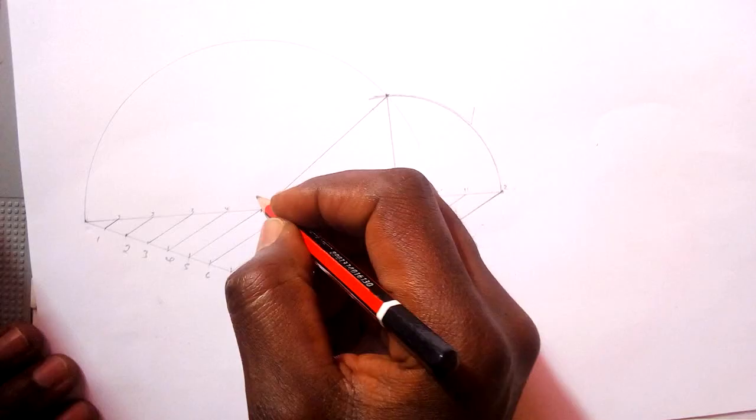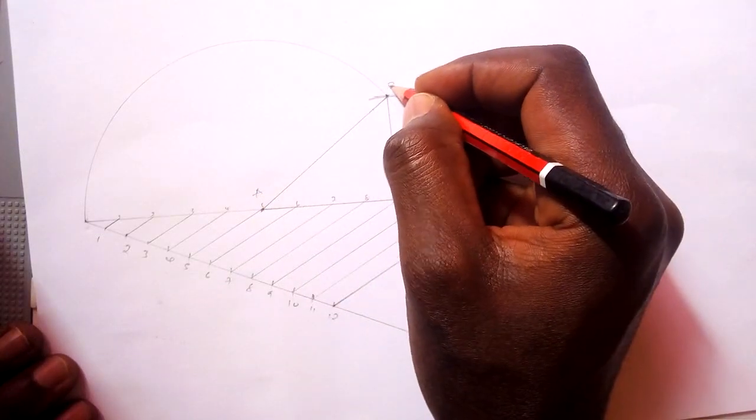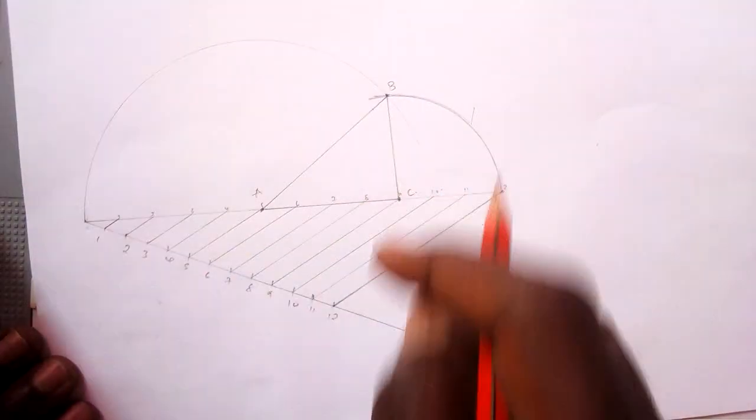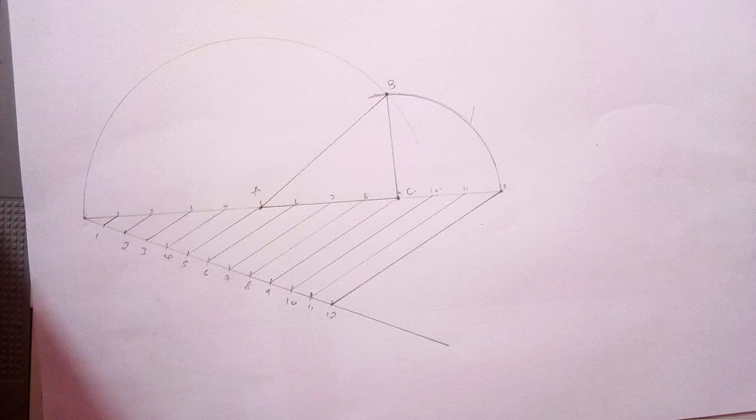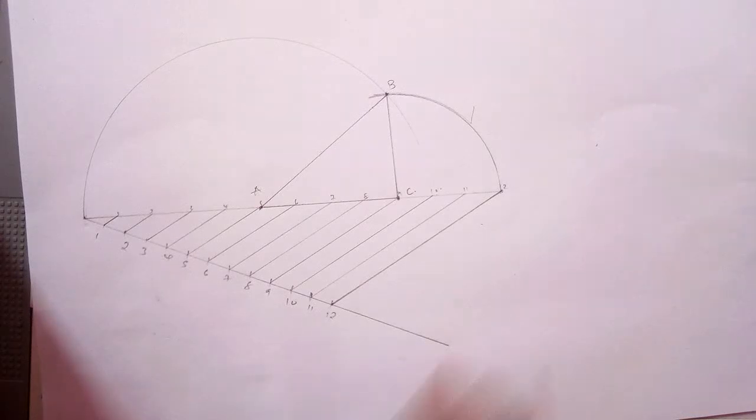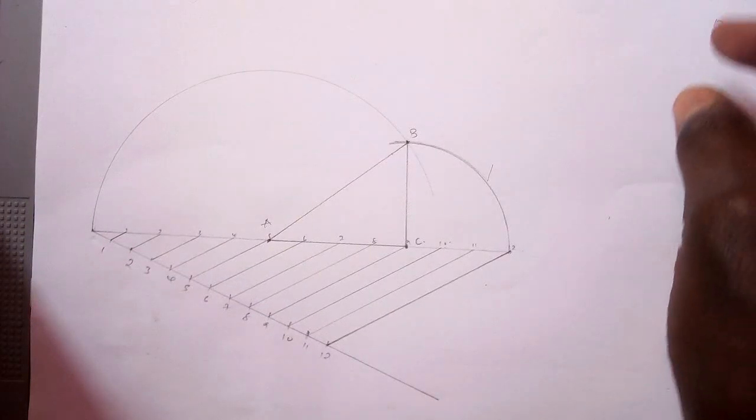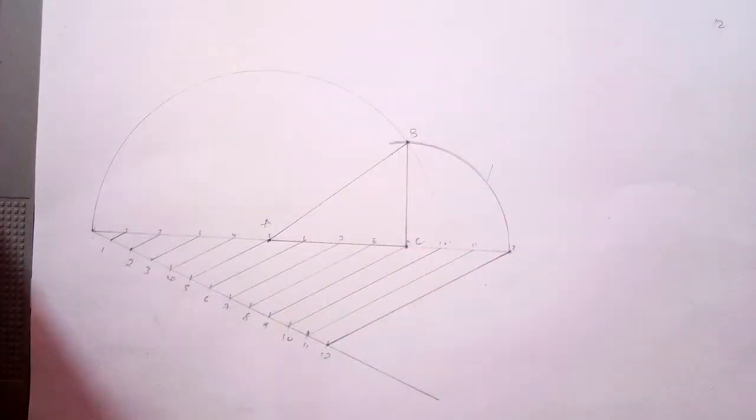You have already got your triangle, which will be ABC. Label it A, B, C. That is how you can draw a triangle if you are given the ratio of the sides and the perimeter.